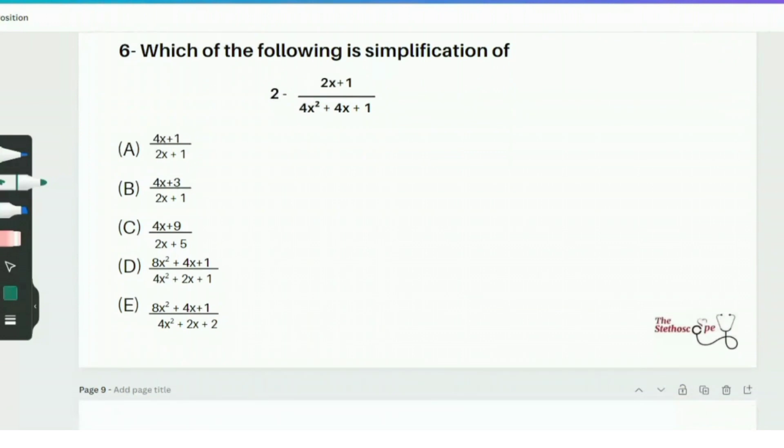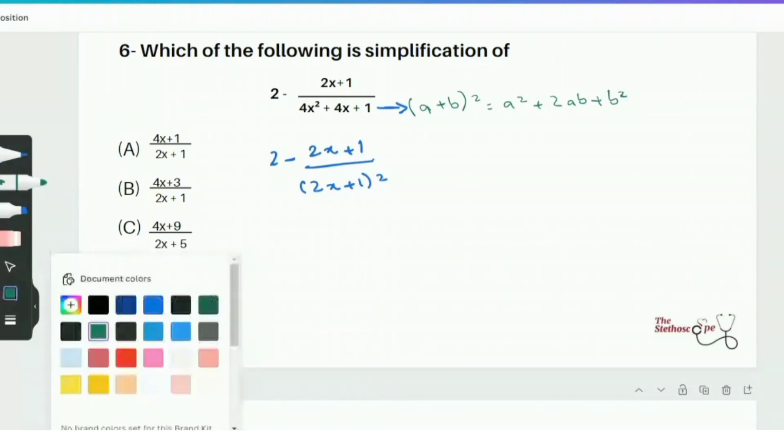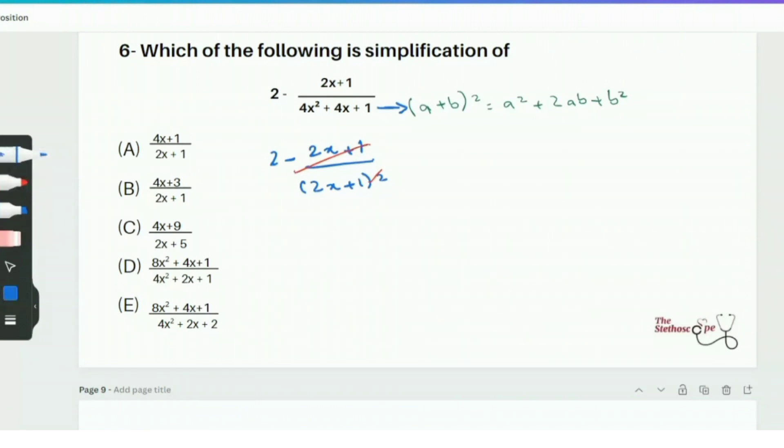Moving towards question number 6, which of the following is simplification of. Here we got an equation 2 minus this expression and instantly we should try to work out whether the bottom part of the denominator can be factorized. We have a squared value and therefore we should start to think about whether we can take out a factor in this case. So in this case it would be useful of 2x plus 1. We can rewrite this as 2 minus 2x plus 1 over 2x plus 1 whole square. The reason of writing it this way is we know that a plus b whole square equals a square plus 2ab plus b square. And this satisfies the above equation. Now we can eliminate 2x plus 1 from either side so we can cross off these and then this leaves us with one lot of 2x plus 1 on the bottom. So I can rewrite this as 2 minus 1 over 2x plus 1.